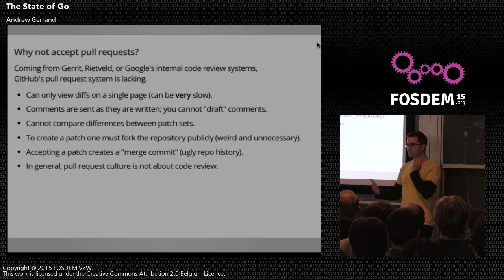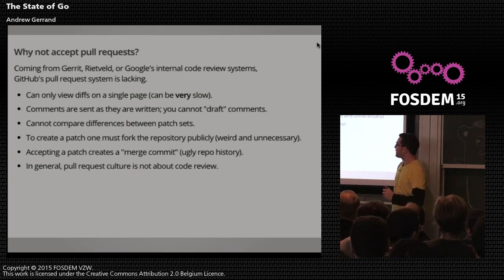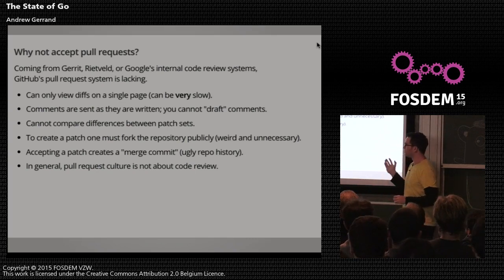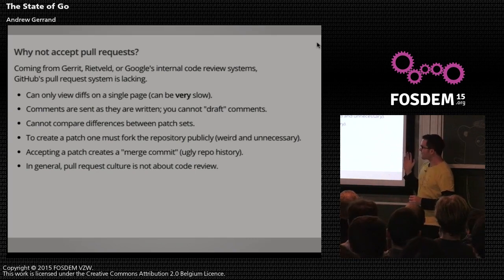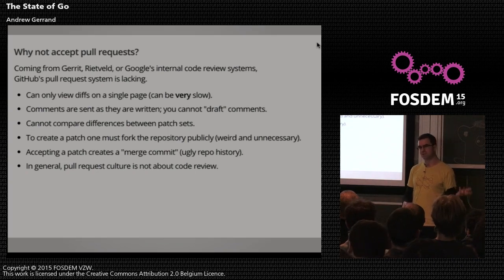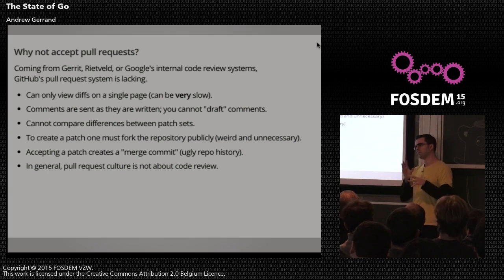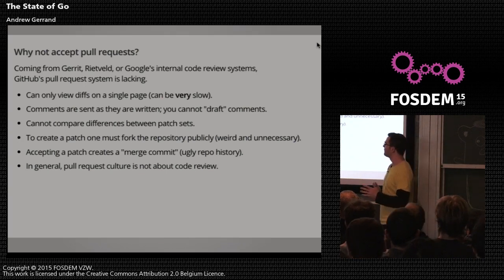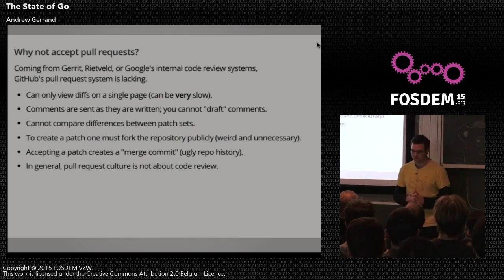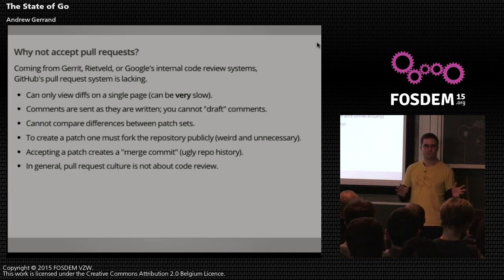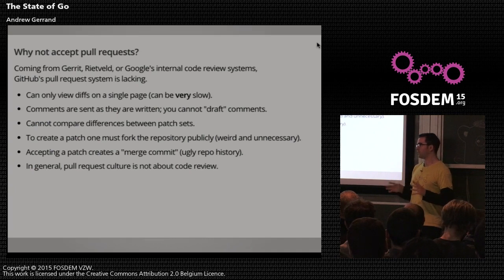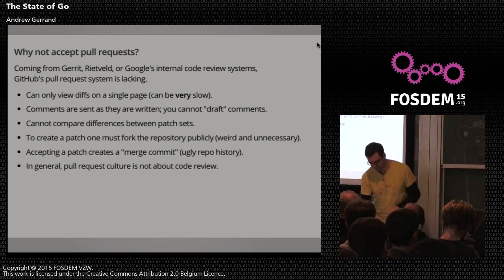You also can't see differences between editions of a patch set as they evolve. You have to fork the repository publicly, which seems weird. When you accept a pull request it creates a merge commit, and we prefer to cherry-pick changes to the top of the branch for a cleaner history. In general, pull requests don't encourage thorough code review, whereas we have a culture of very thoroughly reviewing all changes.